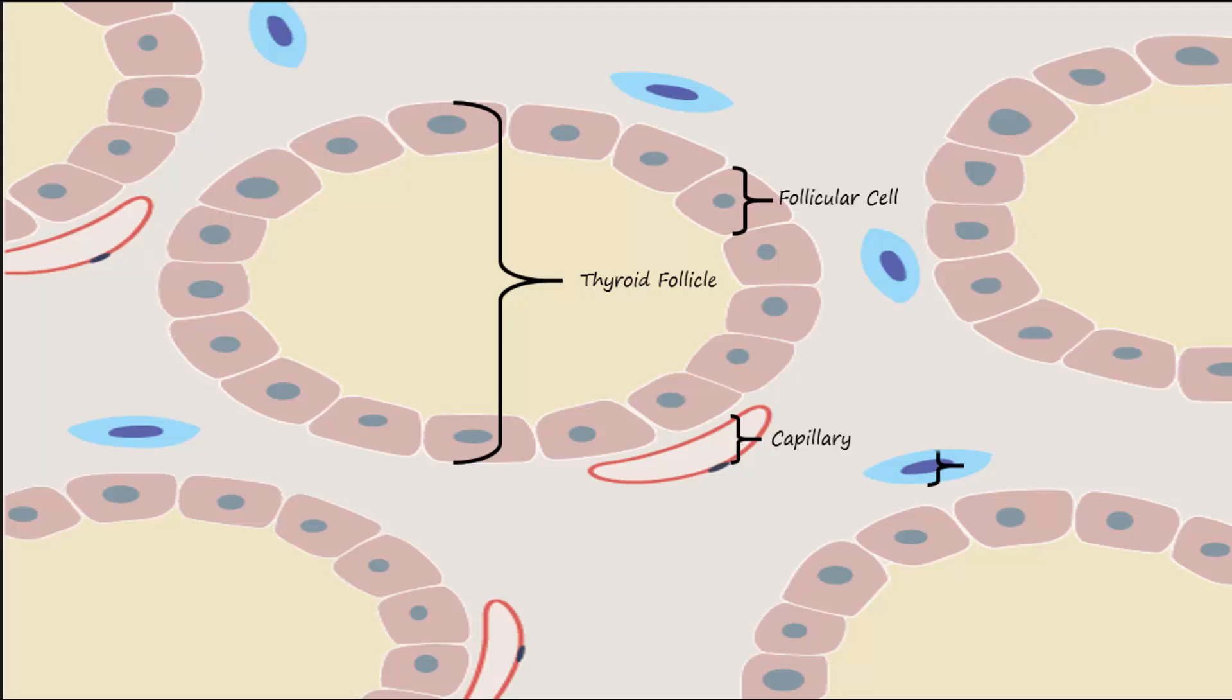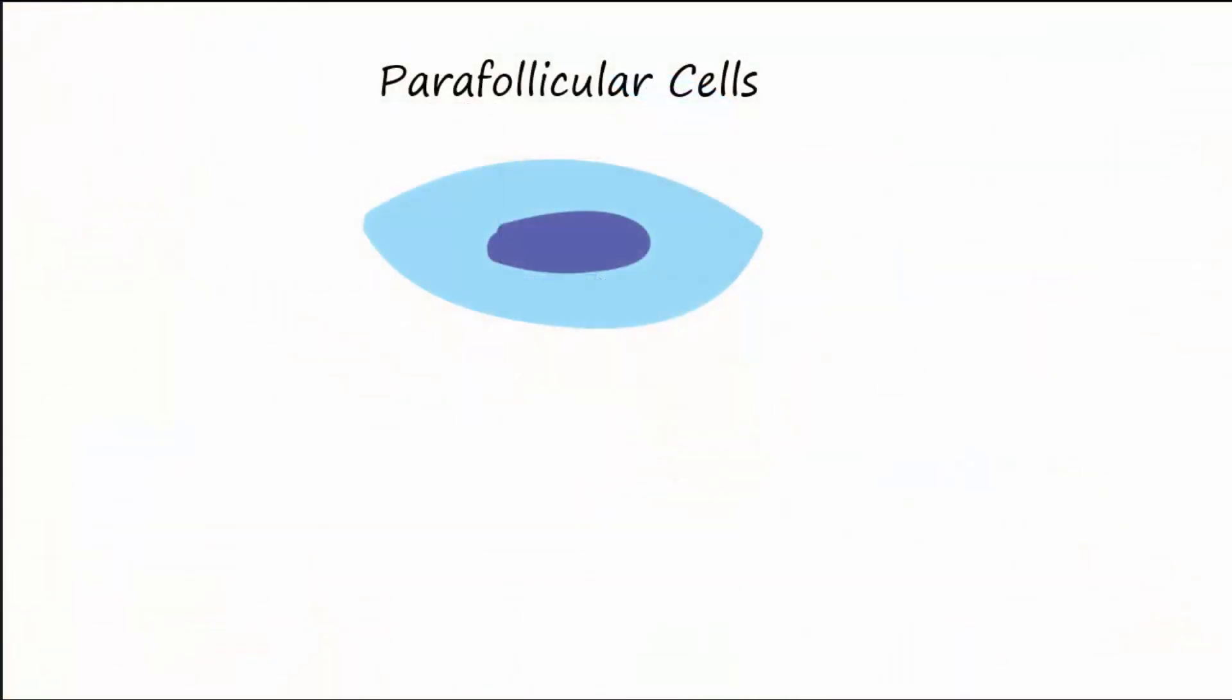Interspersed between the follicles are parafollicular cells. The parafollicular cells make and secrete the hormone calcitonin. Calcitonin acts to decrease blood calcium levels and increase bone calcium levels.